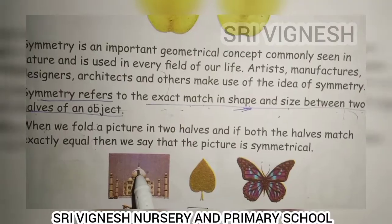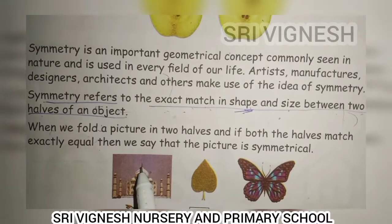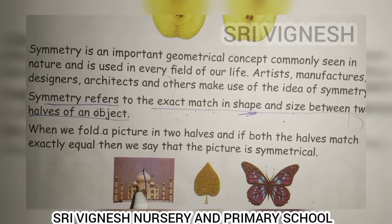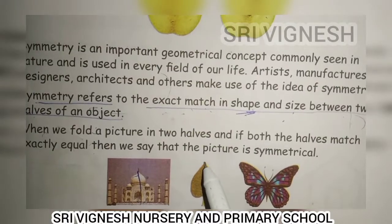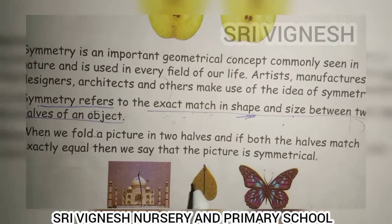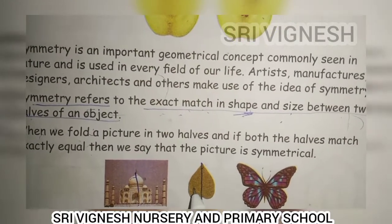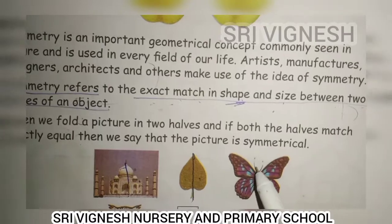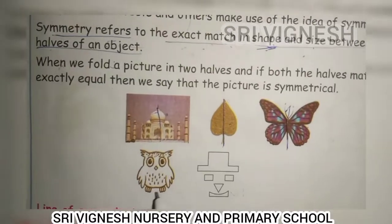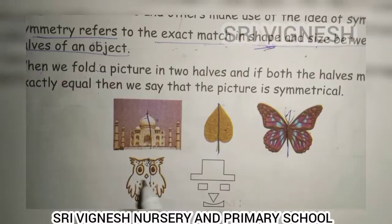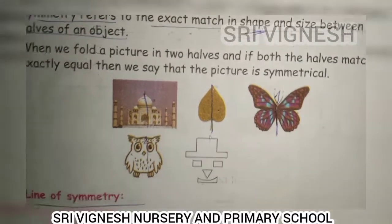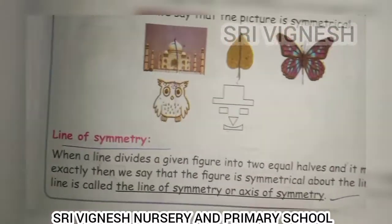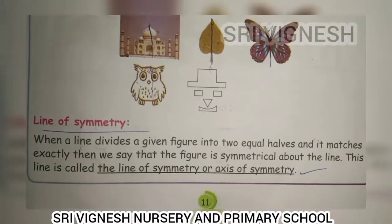Let's put some symmetry together. For example, just imagine it — you put this side equal to the other side. The bottom line is equal to the bottom line. So that's the line of symmetry.